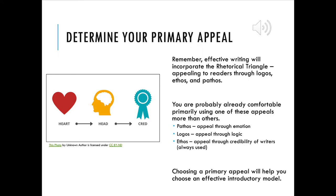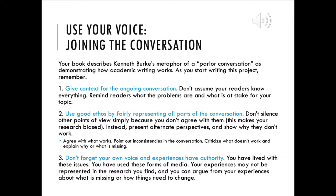I want you now to think through your own rhetorical appeals as you get ready to start writing this final project. Determine what your personal primary rhetorical appeal will be. Effective writing will incorporate all of the appeals: logos appeals to the audience's logic, pathos appeals to people through emotion by targeting the audience's feelings, and ethos appeals to your own sense of credibility, establishing your own authority to speak about the issue you've researched. Choosing a primary appeal will help you choose an effective introductory model, which we'll see in just a moment.